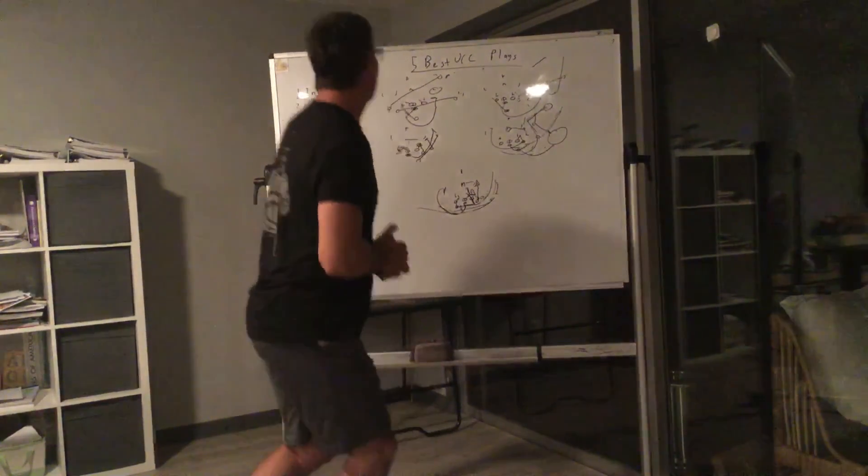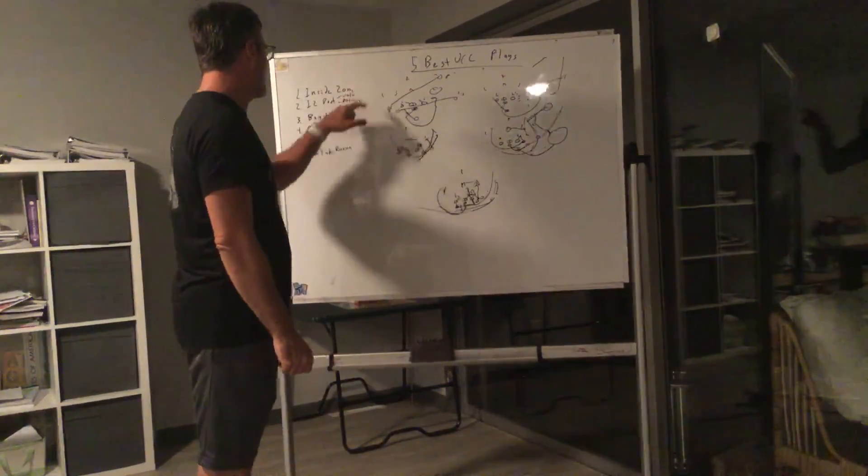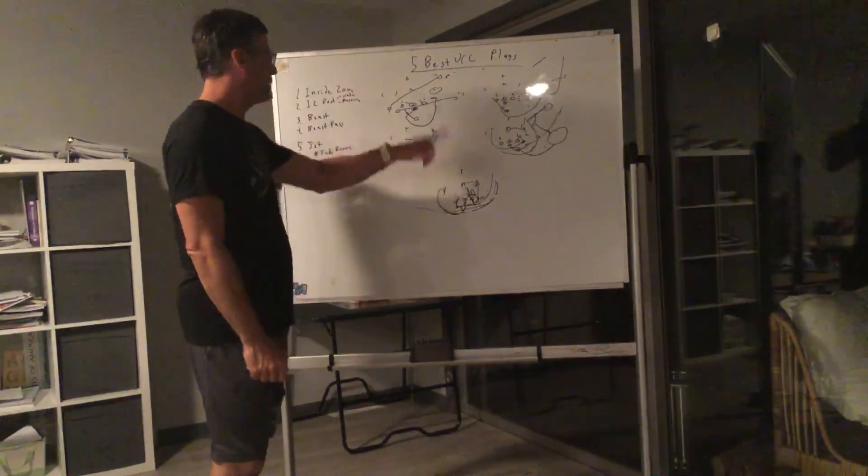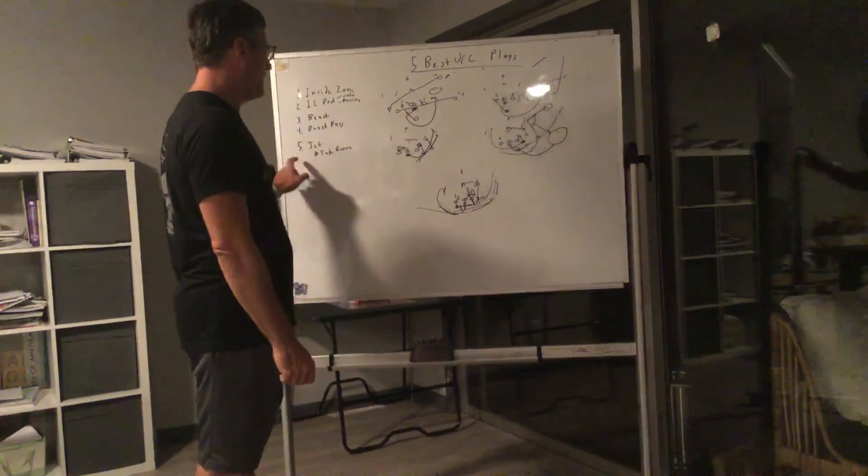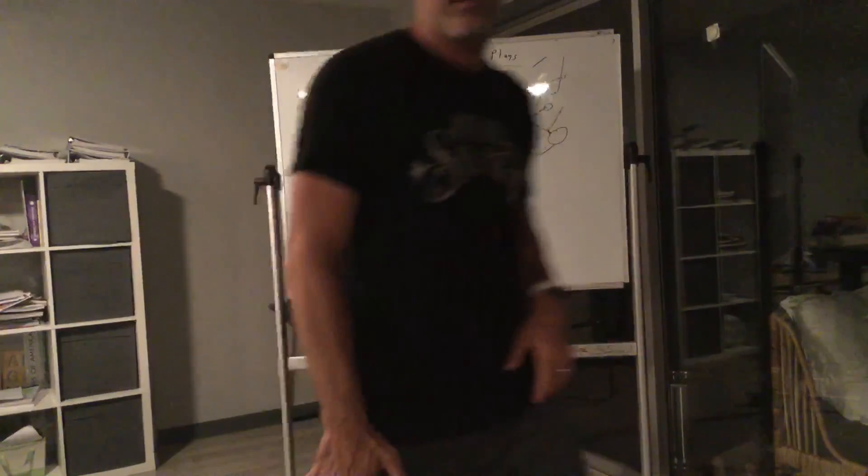All right, there you go. Five best running plays. Inside zone, the boot off inside zone, you've got two different options of that. Under the Mississippi, beast, beast pass, a couple versions of that. The jet under center, fake reverse, and the real reverse. Have fun. That's all you need, guys.